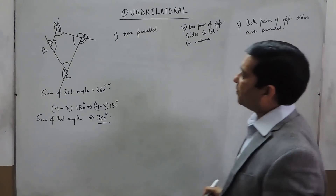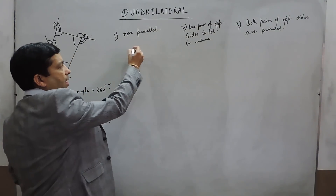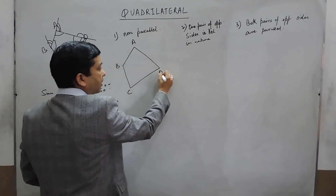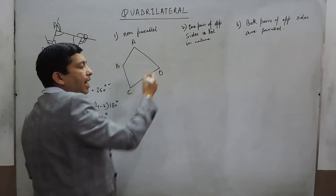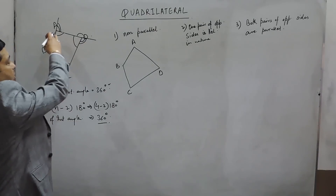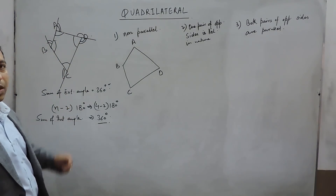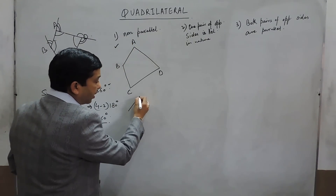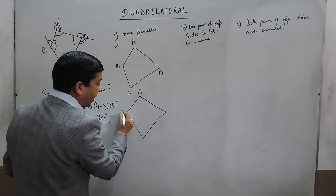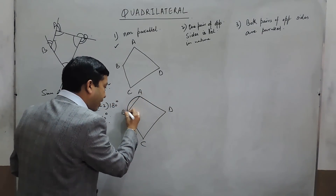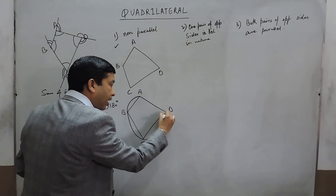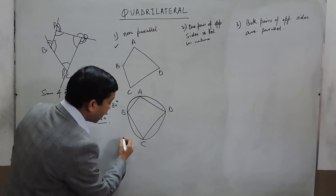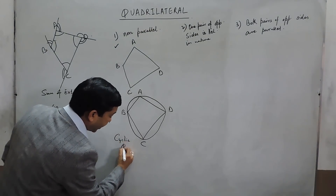When all four sides are non-parallel, that means sides AB and CD are not parallel to each other, while BC and AD are also not parallel. The only property here is that the sum of all internal angles is 360° and the sum of all external angles is also 360°. This is the basic quadrilateral. Within the basic quadrilateral, there is one more type possible: one on which we can draw a circle joining all four vertices, and this is known as a cyclic quadrilateral.